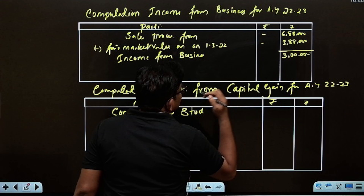The CII for 2001 is 100 and for 2021-22 is 317. Indexed cost of acquisition = 1,00,000 divided by 100 multiplied by 317 = 3,17,000 rupees. Capital gain = 3,88,000 minus 3,17,000 = 71,000 rupees.